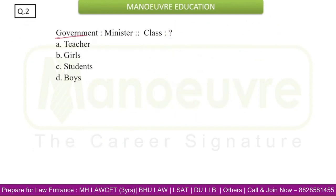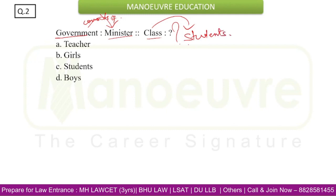Moving to the next question — a simple analogy: Government is to Minister, so Class is to what? We frame the relation: 'Government consists of Ministers.' So Class will consist of Students. The answer is Option C: Students.